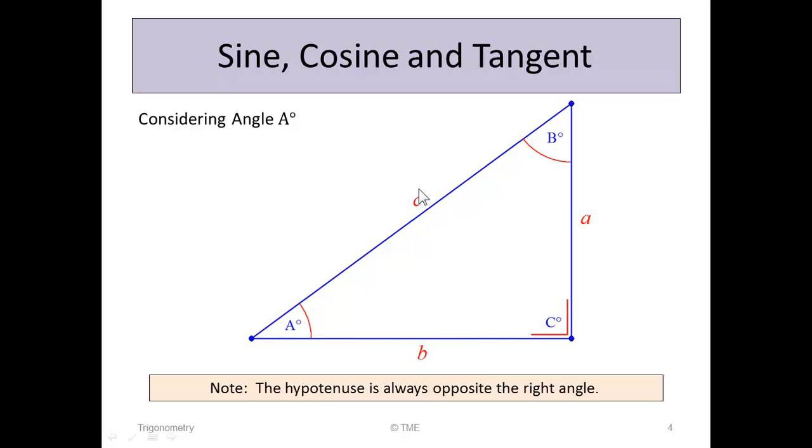We know where the hypotenuse is, but how do we get the opposite and the adjacent? An important step to remember is you look at the angle you're interested in, and from that angle you draw an arrow to the side that's not touching it.